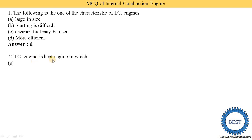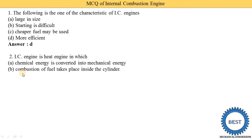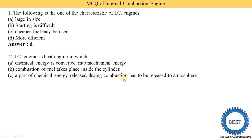Next MCQ: the IC engine is a heat engine in which chemical energy is converted into mechanical energy. Option B: combustion of fuel takes place inside the cylinder. Option C: part of chemical energy released during combustion is released to the atmosphere. Option D: all of the above. All statements are correct — chemical energy of petrol or diesel is converted to mechanical energy, combustion occurs inside the engine, and exhaust is released through silencers. So option D is correct.